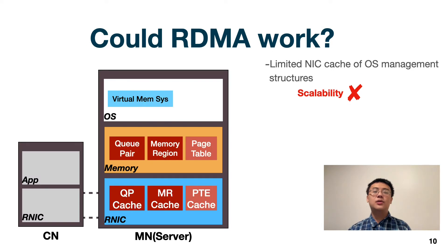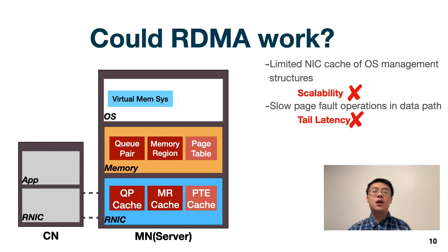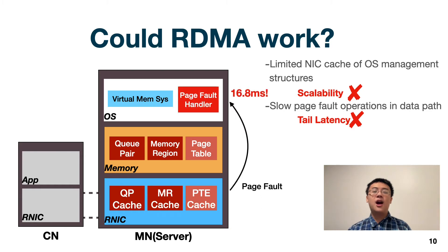Moreover, let's take a close look into the server's network stack, RDMA. RDMA cannot work on its own — it has to work with servers and their operating systems. As a result, RDMA NICs must use limited hardware resources to cache OS-managed data structures, including connection info, queue pairs, memory info, page tables, and memory regions. Limited cache affects scalability, and any cache miss can cause a huge performance drop. To make things worse, when a data access triggers a page fault, the RNIC hardware needs to ask the OS to refill the page, a process that can take up to 16.8 milliseconds — thousands of times slower than normal data access.